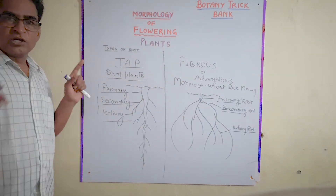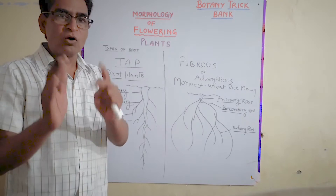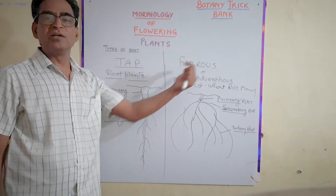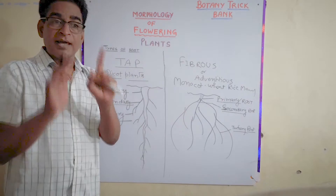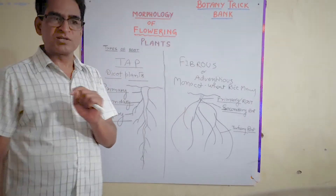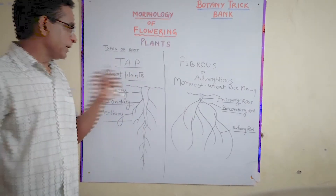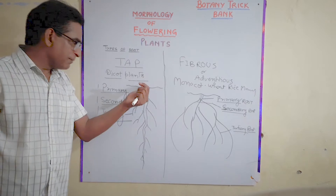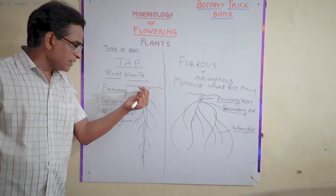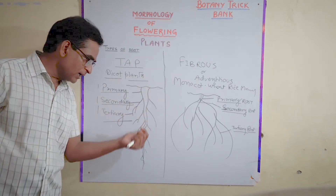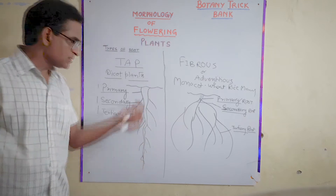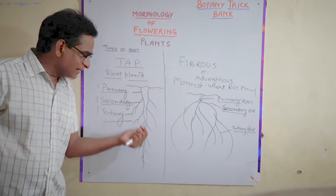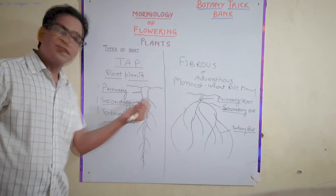Students, here you have to keep in mind how you define the tap root system and how you define the fibrous root system. In the tap root system, if you observe the structure, the primary root is very prominent and is growing throughout. That is, the primary root is more dominant than the secondary and tertiary roots.